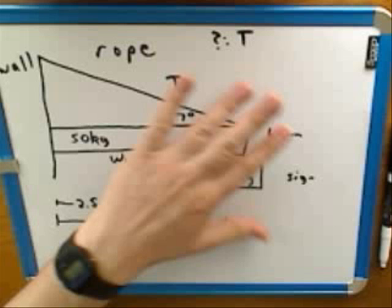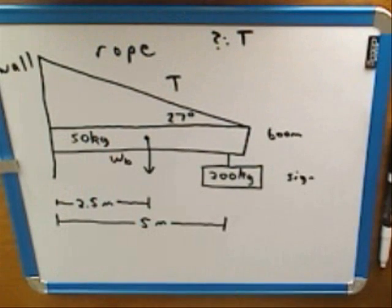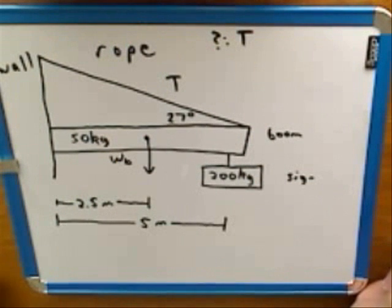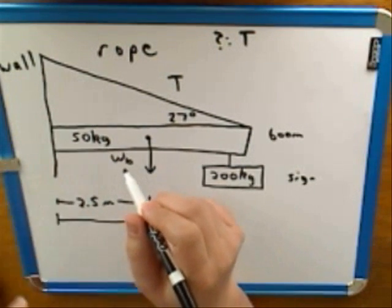I'll draw that weight at the center. We can call that WB for the weight of the beam. How do we calculate it? You multiply by 9.8 — so 50 times 9.8 gives 490 newtons. So the weight of the beam is 490 newtons.